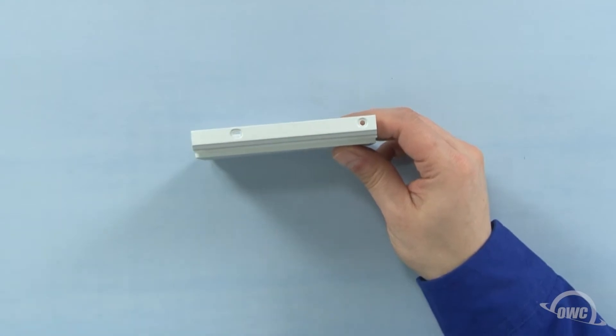On the heat sink, notice that one side has a longer gap before the mounting point than the other. Slide the bridgeboard assembly along the groove in the heat sink so that the mounting holes line up and the external ports are on the same side as the longer gap.